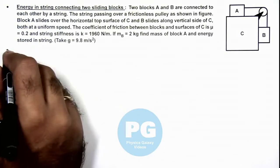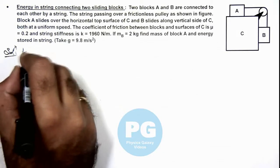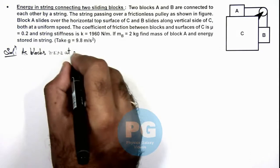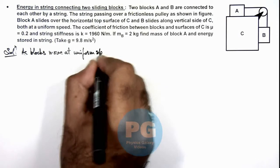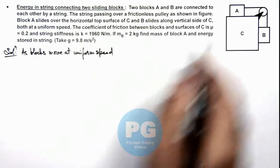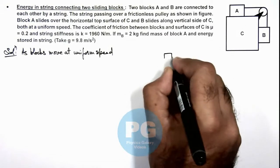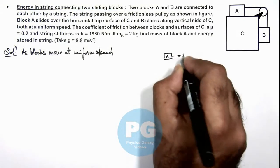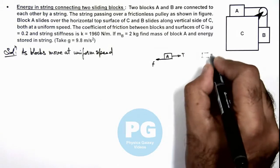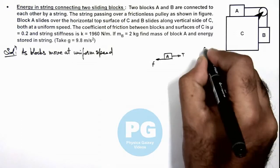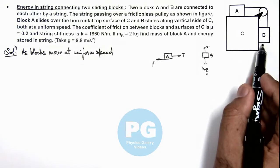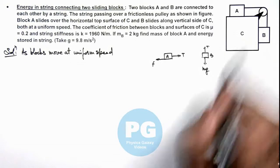First, we can directly write that as blocks move at uniform speed, we can write the equation of motion for the blocks. For writing equation of motion, if we draw their free body diagram, then we can write: for block A it is experiencing a tension toward right and a friction toward left. And if we talk about block B, it is experiencing mg in downward direction and tension in upward direction.